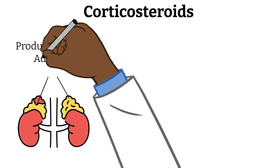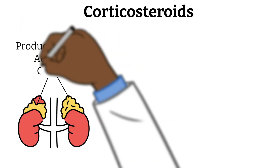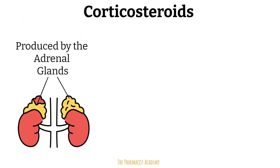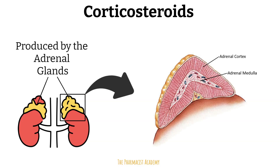Corticosteroids are hormones produced by the adrenal glands — one of those organs that many people forget where it's located. It sits right on top of the kidneys. If we take a cross section of the adrenal gland, there are two main parts you should know: the adrenal cortex and the adrenal medulla. Our focus will be the adrenal cortex.